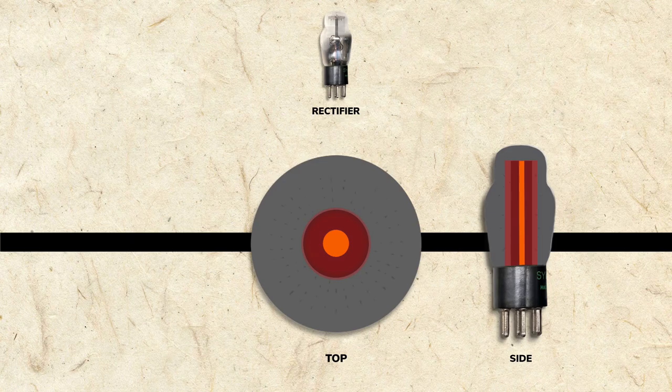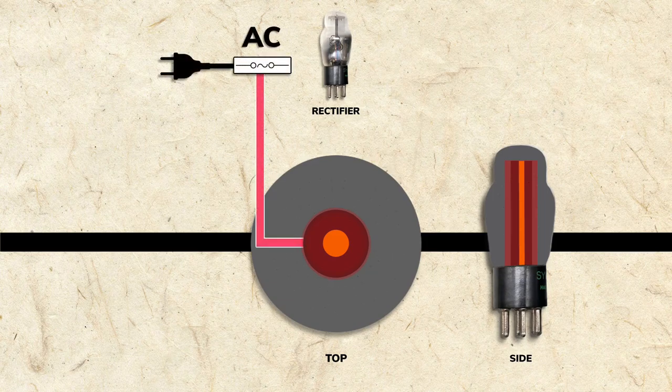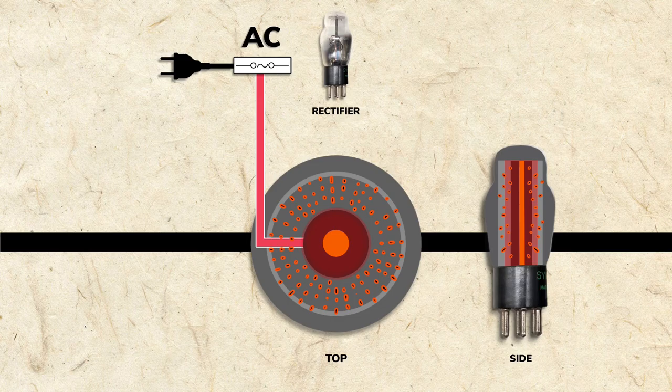Cathodes are covered with ions that burn off as negatively charged electrons when hot. The rectifier's cathode is connected to the AC power line. As it burns off electrons, the AC charge flows into the vacuum and is attracted to the plate. This creates a current that is sent to power the radio.